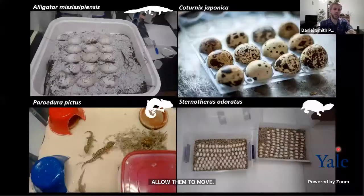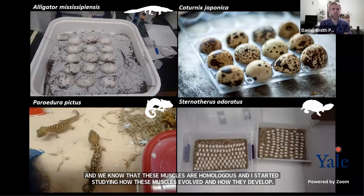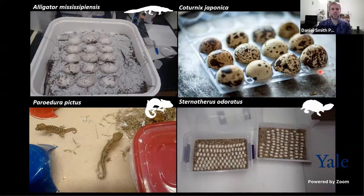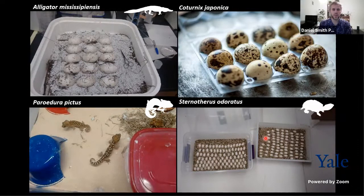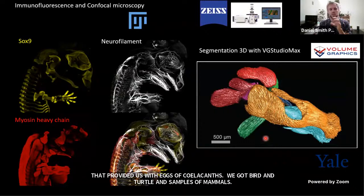I started studying how these muscles evolved and how they develop by getting embryos of different animals. Here I show a colony of lizards that provided us with gecko eggs. We got alligator eggs, bird eggs, turtle eggs, and also embryos of three mammals. The protocol we use is called immunofluorescence — we can label different proteins that are particular to specific tissues in these embryos. We can label the skeleton, the developing nerves, the developing muscles — for example in this alligator embryo.